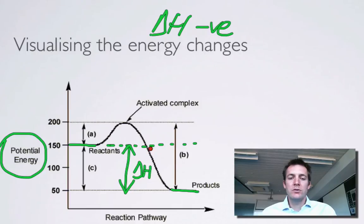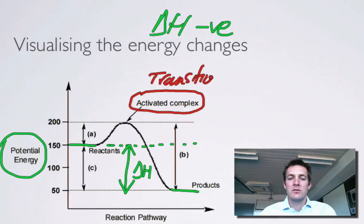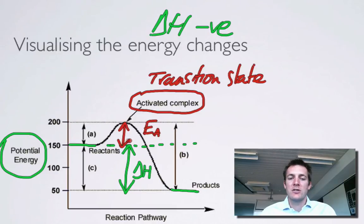Here we can also show something called the activated complex — it's a kind of halfway house between reactants and products. It's a high energy state, which some people call a transition state. The energy we have to put in to get from reactants up to this activated complex is called the activation energy, and we give that the symbol EA. So activation energy is the difference in height between the reactants where we start and the top of the hump we have to get over to reach the products. It's the minimum amount of energy we have to put in to get a reaction started.